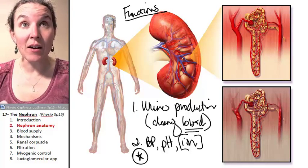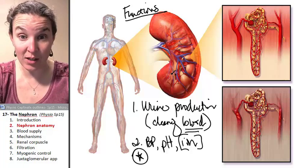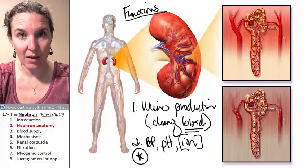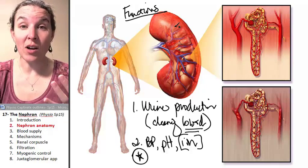Let's talk about the anatomy of the nephron. There are about a million nephrons inside a single kidney. That should give you a perspective of how small the nephron is.